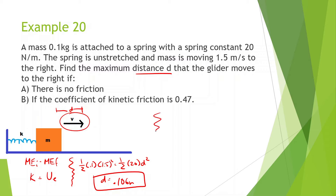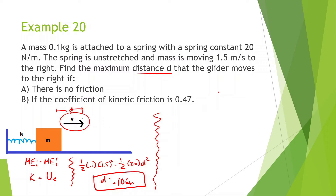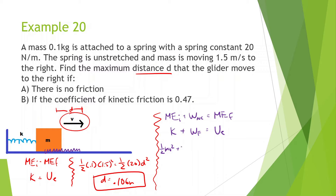Now let's look at part B. If the coefficient of friction is 0.47, there's friction involved, so we're going to use: mechanical energy initial plus work non-conserved equals mechanical energy final. Think about it — if there's friction, will it go as far or not as far? At the beginning it's just kinetic energy. As it slides, there's a work of friction happening. This equals the mechanical energy final at maximum distance D, which is all elastic potential energy. So we have one-half times mass times v squared plus the work of friction — which is force of friction times displacement times cosine of 180 — equals one-half times K times x squared.